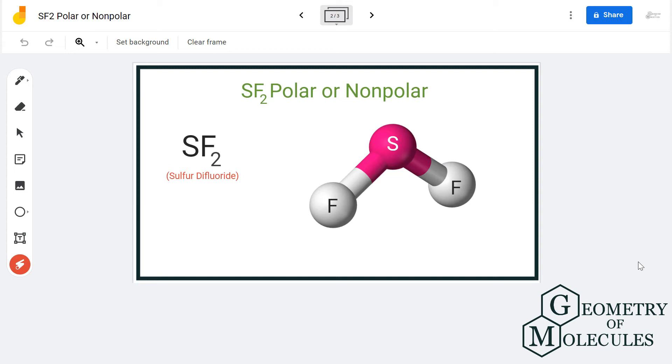As the shape is not linear, there will be a dipole moment between fluorine and sulfur atom because fluorine is more electronegative than the sulfur atom. Because the shape is not linear, these dipole moments will not be cancelled out and hence there will be a formation of poles in this molecule, making SF2 a polar molecule.